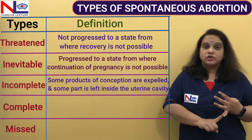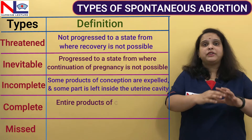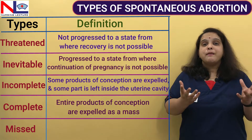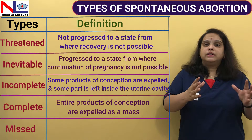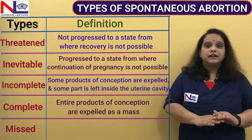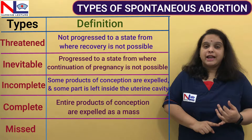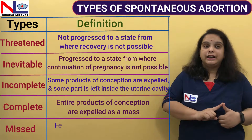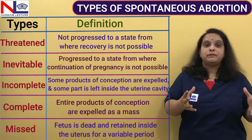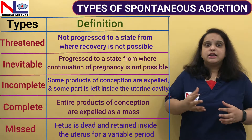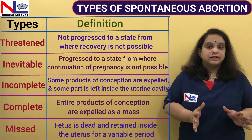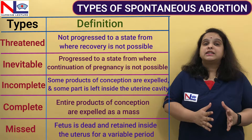The fourth type is complete abortion — everything comes out either as a mass or through severe massive bleeding, and the cavity is altogether empty because nothing is left inside. The fifth type is missed abortion, where the fetus is dead inside and lying within the cavity for a variable period of time — maybe for days or weeks. It is not alive inside; it is dead.